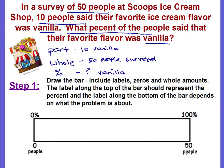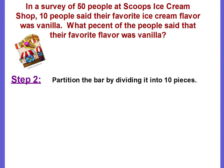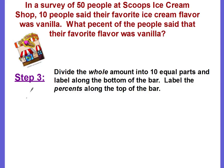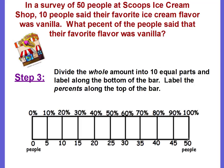Step two: partition the bar by dividing it into 10 equal pieces. We found that 10 is the easiest to work with. Step three: divide the whole amount, 50, into 10 equal parts and label along the bottom. 50 divided by 10 is 5, so each part represents 5 people. Do the same for the percent: 100 divided by 10 equals 10 percent per part.